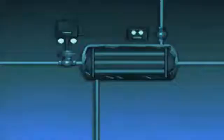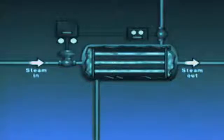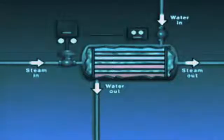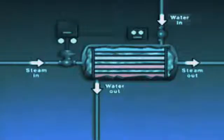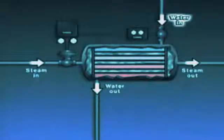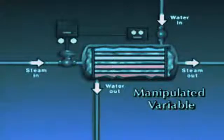A feedforward control system attempts to correct for a process disturbance before the controlled variable in the process deviates from set point. In this heat exchange process controlled by a feedforward system, steam flows through tubes inside a heater and heats water flowing around the tubes. The controlled variable is the outlet water temperature. The inlet water temperature is the measured variable used to determine whether a control action is needed. The manipulated variable is the steam flow into the heater.